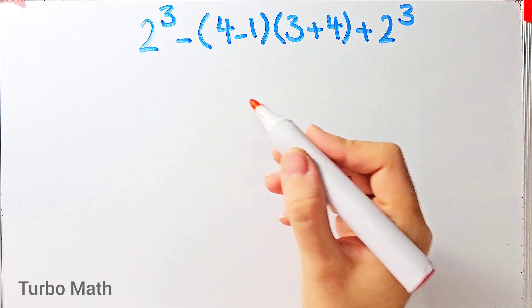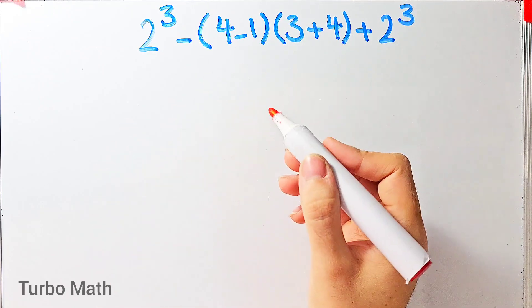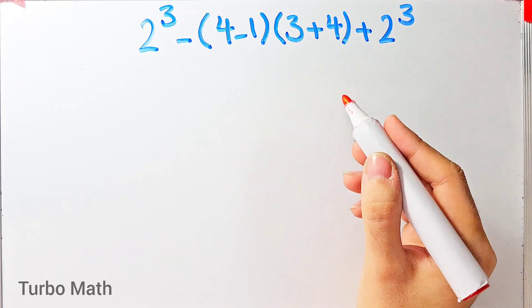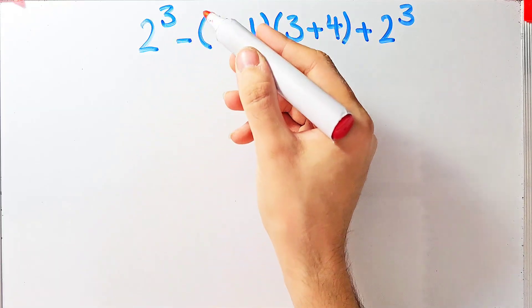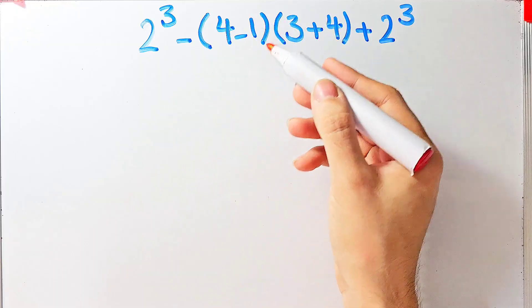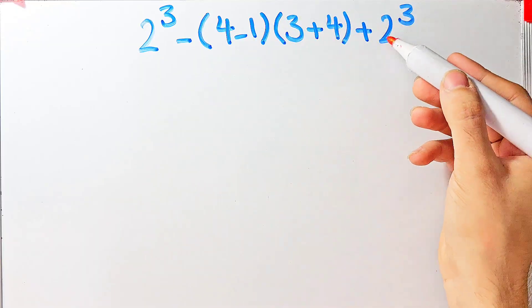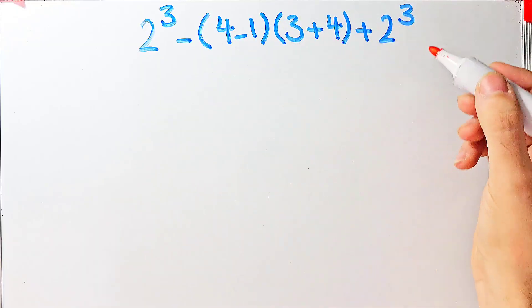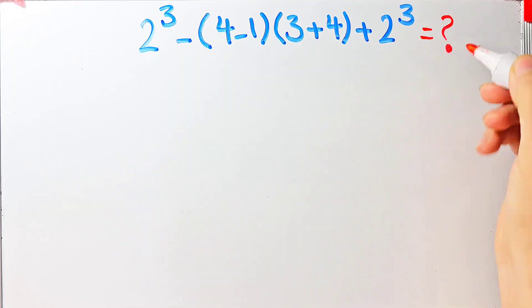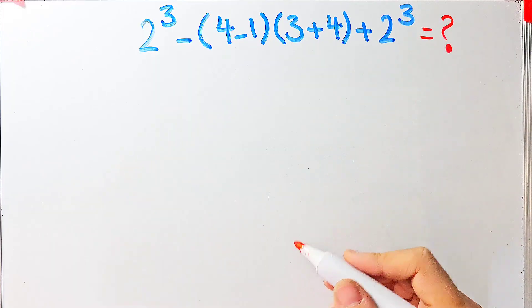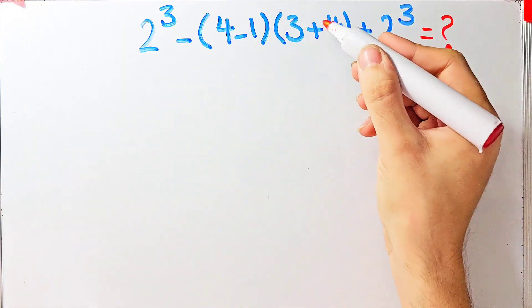Hi friends, welcome to Turbo Math channel. Many people when they see this question don't know which operation to do first, so they might get it wrong. The question is: 2 to the power of 3, minus open parenthesis 4 minus 1 close parenthesis, then times open parenthesis 3 plus 4 close parenthesis, then plus 2 to the power of 3. In this question we have exponents, subtraction, parentheses, and addition.